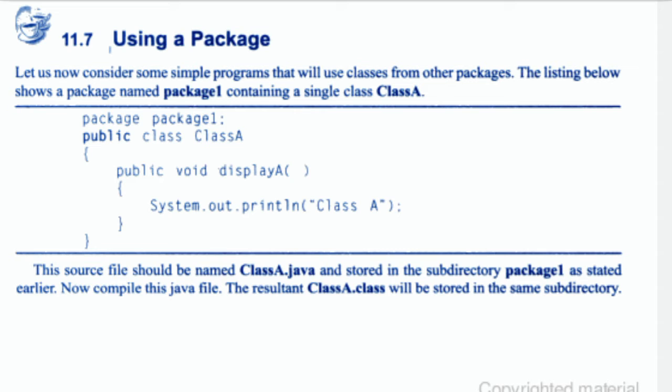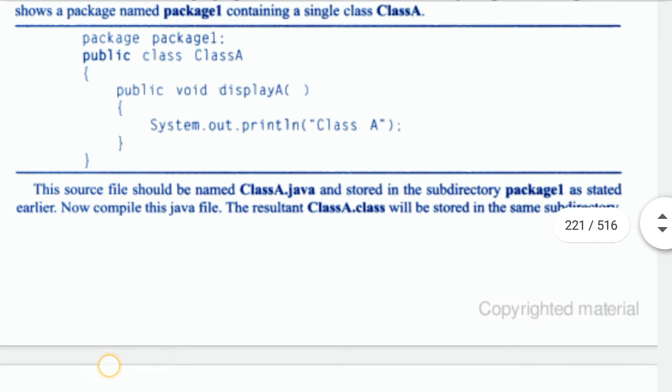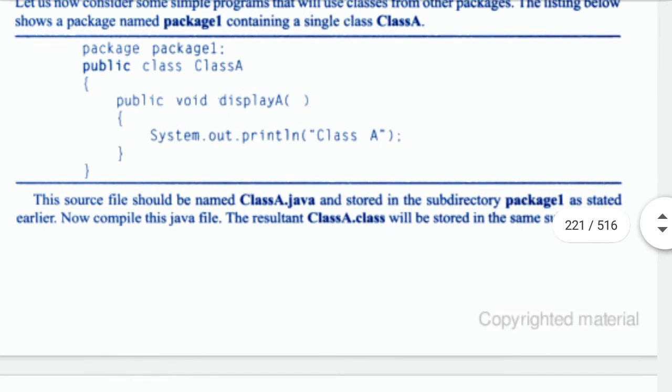The listing below shows a package named package one containing a single class, Class A. This source file should be named ClassA.java and stored in the subdirectory package one. Compile this Java file — the resulting ClassA.class will be stored in the same subdirectory.